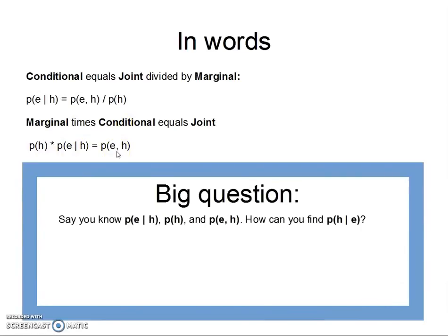And I think we're ready to tackle a pretty big question here, so let's give it a whirl. Say you know these. Say you're given what these probability values actually are. You know the conditional of E given H. You know the marginal of H. And you know the joint probability of E and H. How can you find the other conditional, the probability of H given E? We have E given H. How can we use these three things here to find this?